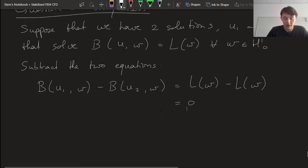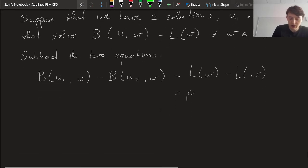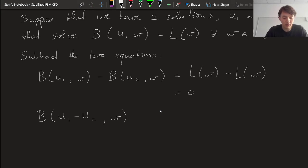Now due to the linearity, the bilinearity, we can rewrite this, we can collapse this into one slot and we obtain u₁ minus u₂. Now, so we're only allowed to do this because of the linearity of our bilinear form, and then this is going to be equal to 0.